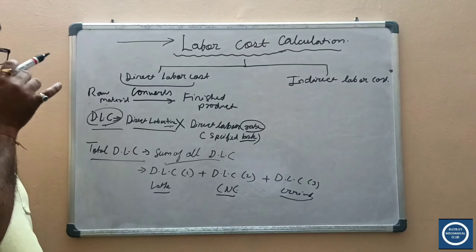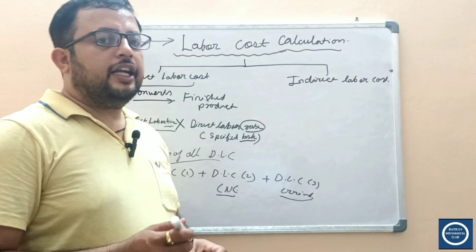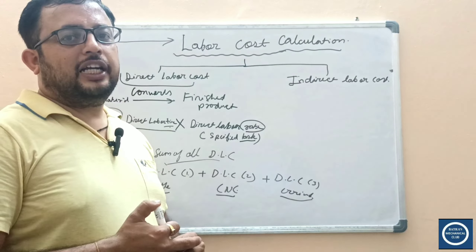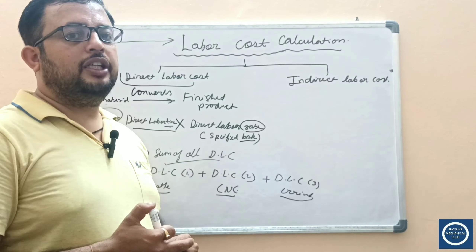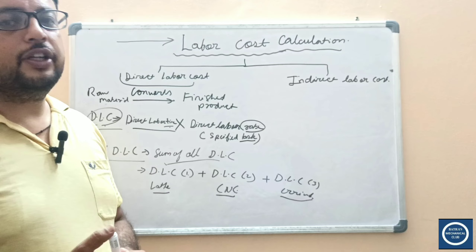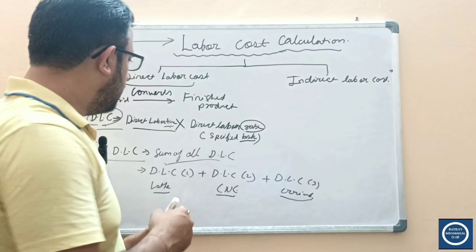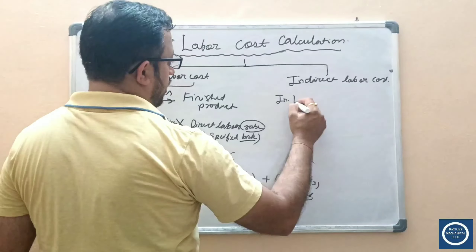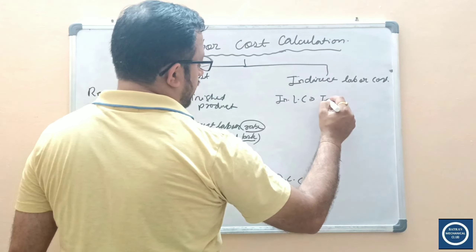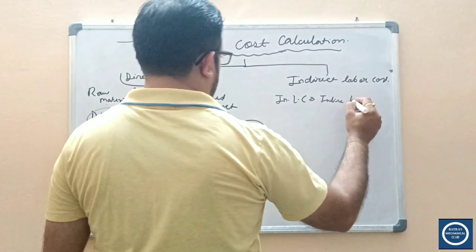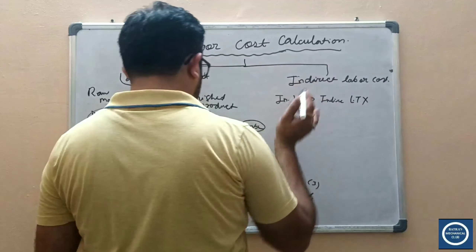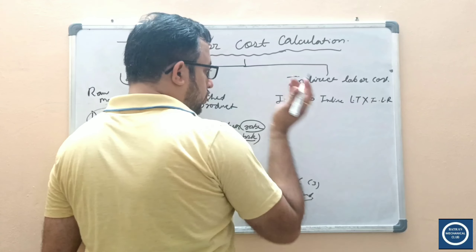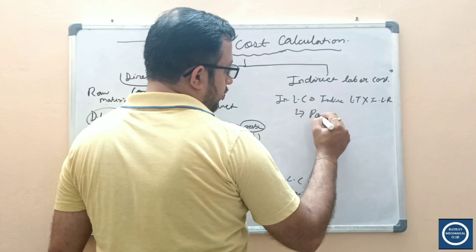What is indirect labor cost? Indirect labor is labor effort that is not directly tied to a specific product, but whose labor is used indirectly to manufacture the product. To find the indirect labor cost, it is the product of indirect labor time multiplied by the indirect labor rate.